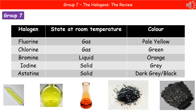There are two key things to learn about the halogens shown in this table: the state of matter at room temperature, and their colour. Fluorine is a pale yellow gas, chlorine is a green gas, bromine is an orange liquid, iodine is a grey solid, and astatine is a dark grey or black solid. You can see pictures of them at the bottom, starting with fluorine on the far left through to astatine on the right.